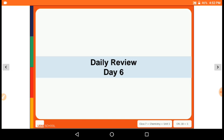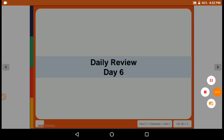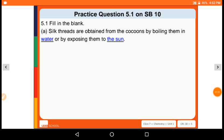Let's start. Practice question number 5.1 on your SB 10. Fill in the blank: silk threads are obtained from the cocoons by boiling them in blank or by exposing them to the blank. The correct answer is water and the sun that you see in blue font here.